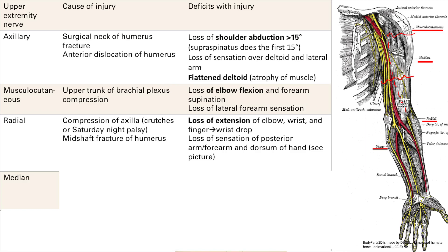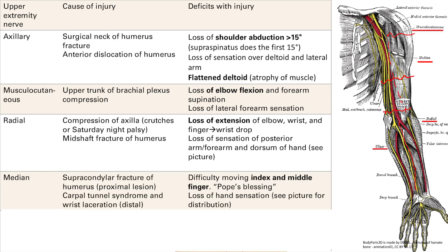For the median nerve review: it runs straight down the middle. Proximal damage comes from a fracture of the supracondyle; distal damage occurs at the carpal tunnel. The deficits are the index and middle fingers — difficulty moving them. The sensation coverage has been drawn out and covers the first three fingers and half of the fourth.